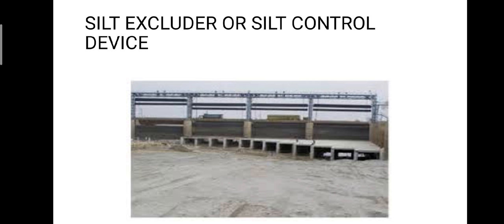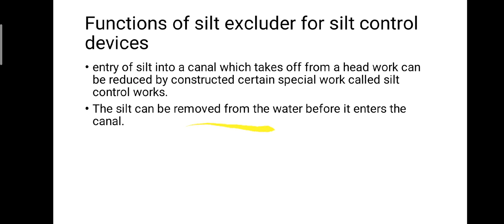The next component is the silt excluder or silt control devices. The entry of silt into the canal which takes off from a headwork can be reduced by constructing certain special works called silt control works. These works may be classified into two types: silt excluders and silt ejectors. Silt excluders are constructed on the bed of the river upstream of the head regulator; clearer water enters the head regulator while silted water enters the silt excluder. The main function is the removal of silt from the water before it enters the canal.